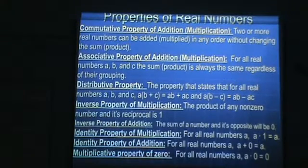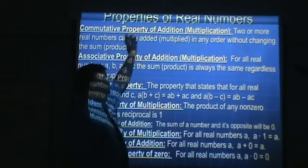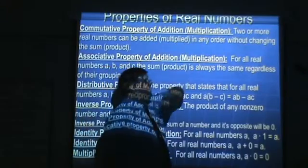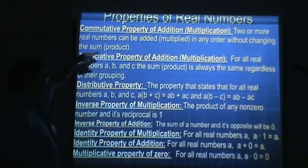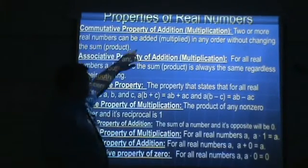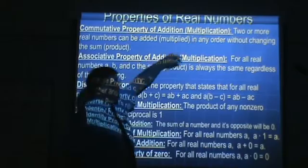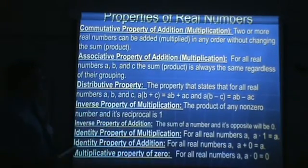Hello, this video is about the properties of real numbers. The first property we're going to talk about is the commutative property of addition. There's also a commutative property of multiplication. Two or more numbers can be added in any order without changing the sum — that's the commutative property of addition. Two or more numbers can be multiplied in any order without changing the product — that's the commutative property of multiplication.